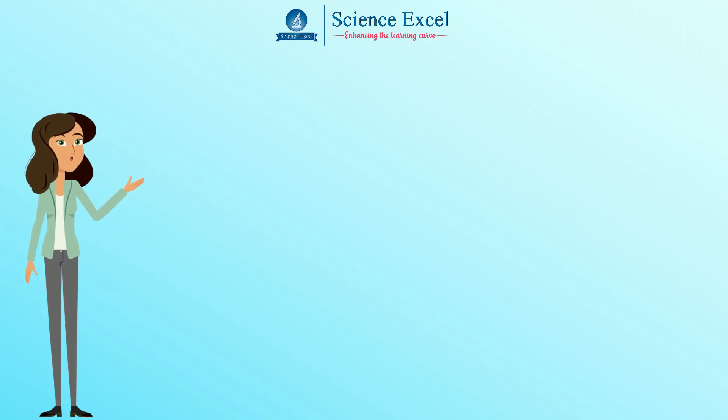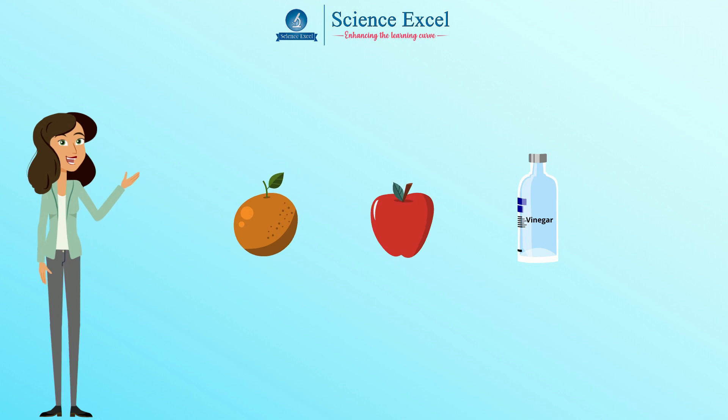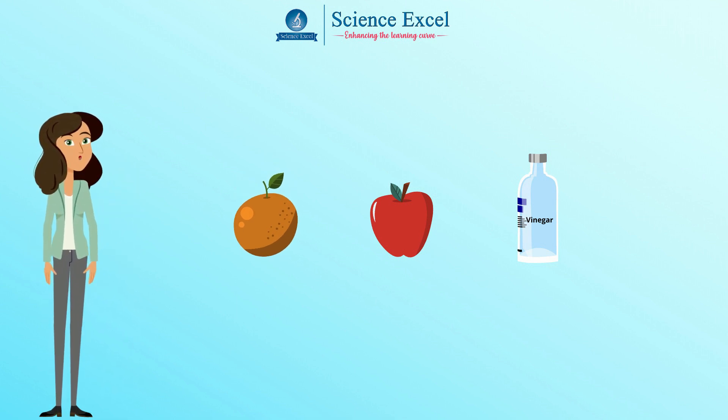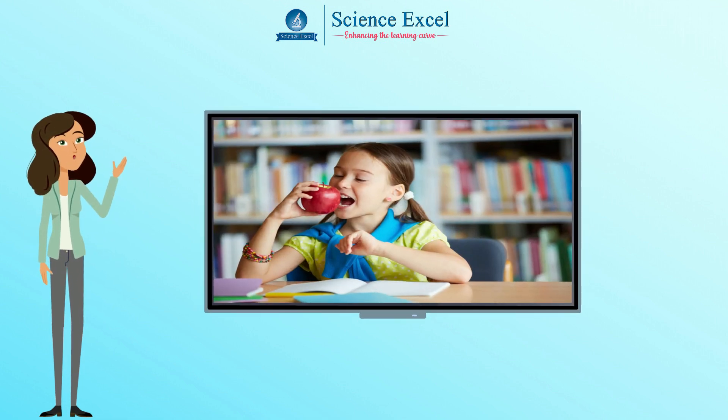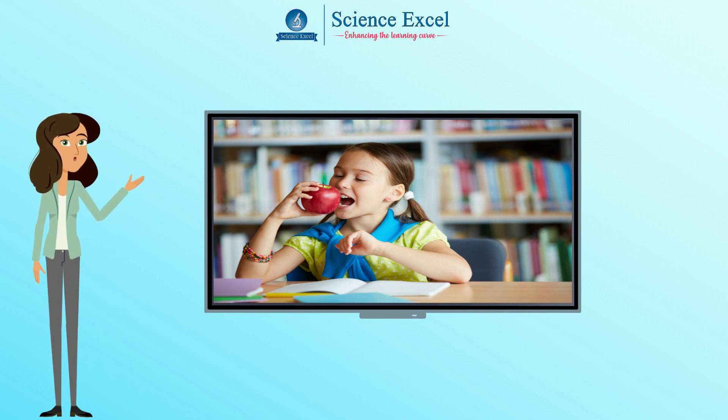Ever wondered what is common in an orange, apple, vinegar, tamarind? Yes, you are right if you said they are acidic in nature. But how do you know that these are acidic? Did you say from their taste? Yes, taste is an important characteristic which is linked to the chemical properties of a substance.